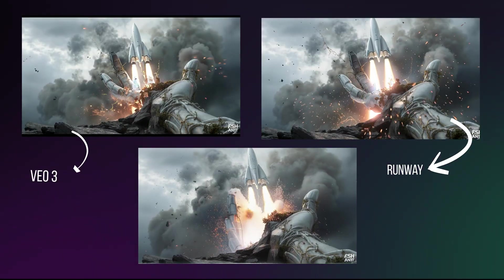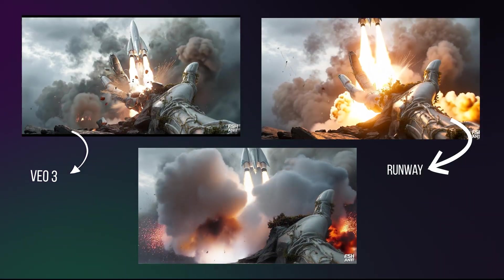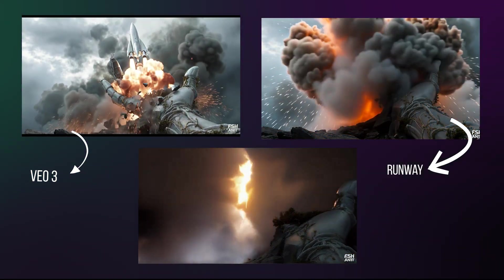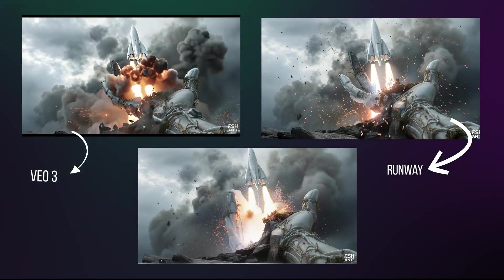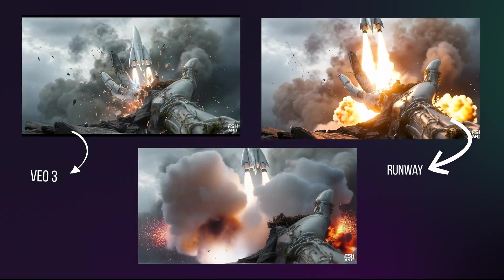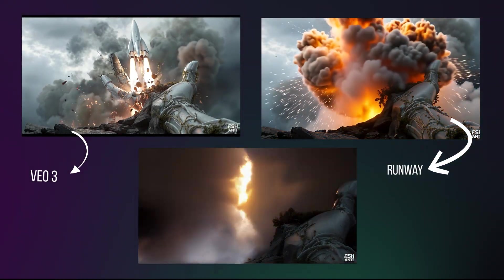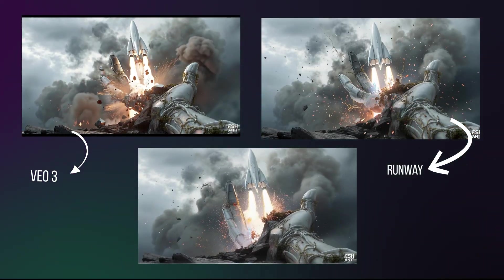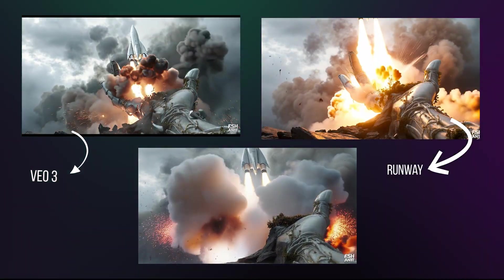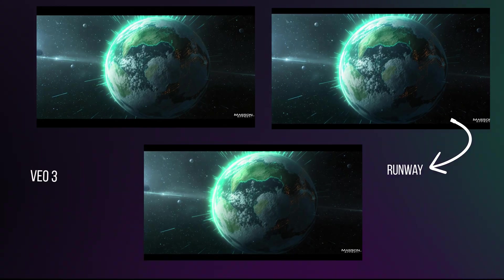For our explosive escape, we wanted a steady camera and a rocket launch with smoke and debris. Runway kept the camera steady but forgot the launch. WAN 2.2 was too fast and ended in darkness. But Veo 3 nailed it: rocket, explosion, and smoke.